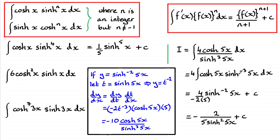To verify: taking sinh(5x) raised to the power −2 and differentiating by the chain rule with t = sinh(5x), y = t⁻²: dy/dt = −2t⁻³, times dt/dx = 5cosh(5x). This gives −10cosh(5x)/sinh³(5x). Comparing with 4cosh(5x)/sinh³(5x), we'd need to multiply by −2/5, and (−2/5)×(−10) = 4 — confirming the answer.